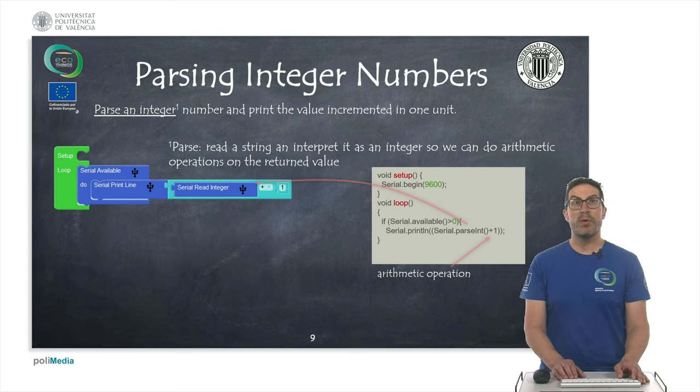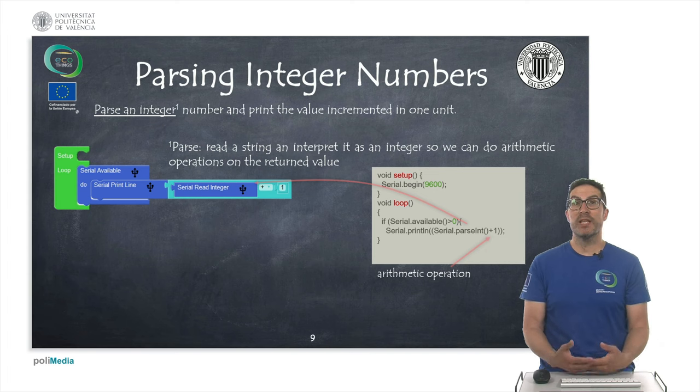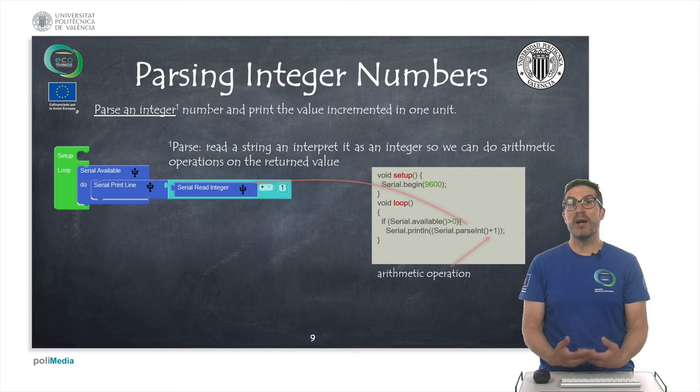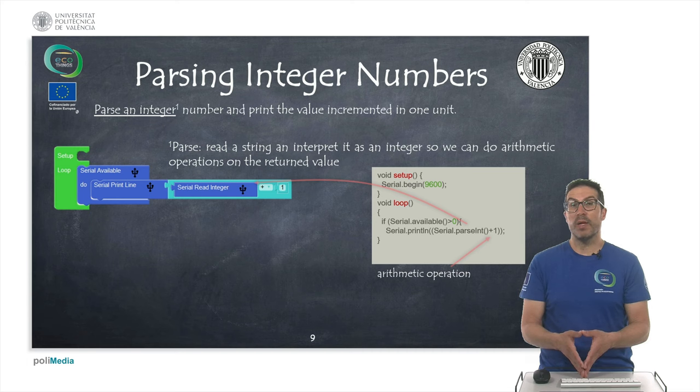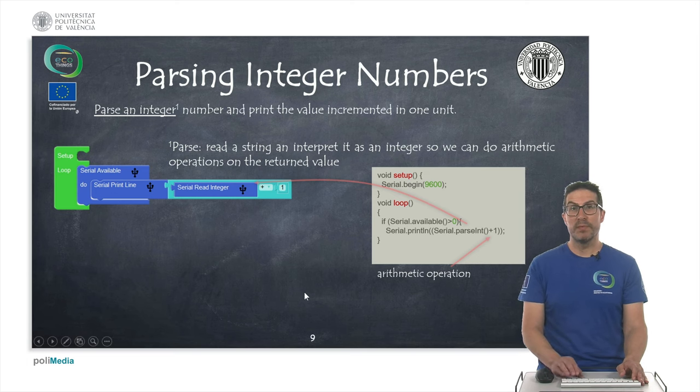In this third example, the idea is to parse an integer. We receive a text and by parsing the integer means that we interpret this text as an integer so we can do some kind of arithmetic operations on it. In particular, we are just simply incrementing one unit, the value that we parse, and return it back and print it back to the serial monitor.